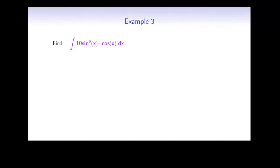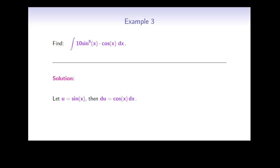Let's see how this is done in the next example. Find the integral of 10 sine to the 9th of x times cos x dx. Here we integrate a power of the sine function multiplied by the cosine function. Since cos x is the derivative of sine x, it makes sense to try the substitution u equals sine x. So let u equal sine x, and then du equals cos x dx. In the given integral, we replace sine x by u and cos x dx by du, getting the integral of 10u to the 9 du. This integral equals u to the 10, and when we go back to x, we obtain sine to the 10th of x plus c.